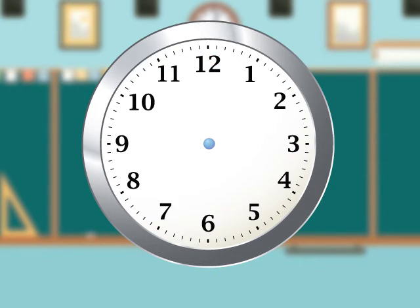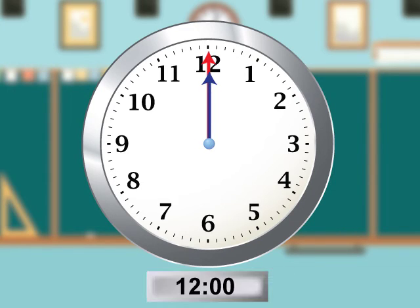Telling time involves reading both the hour and minute hand. Here are some examples. This is 12 o'clock. Both the hour and minute hands point to 12.